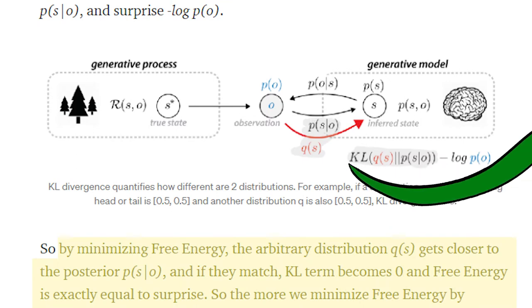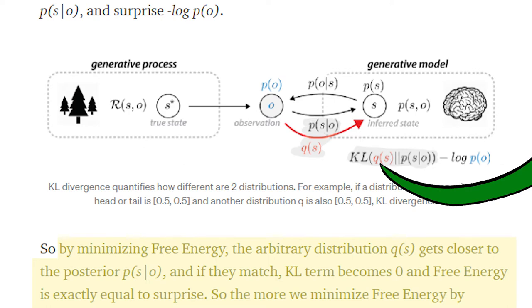And we can probably get pretty close, because q of s is an arbitrary nonsense function we made up. We just have to nudge it closer to p of s given o. To turn math into a metaphor, we're making our private notion of the universe into something similar to what our observations are suggesting.